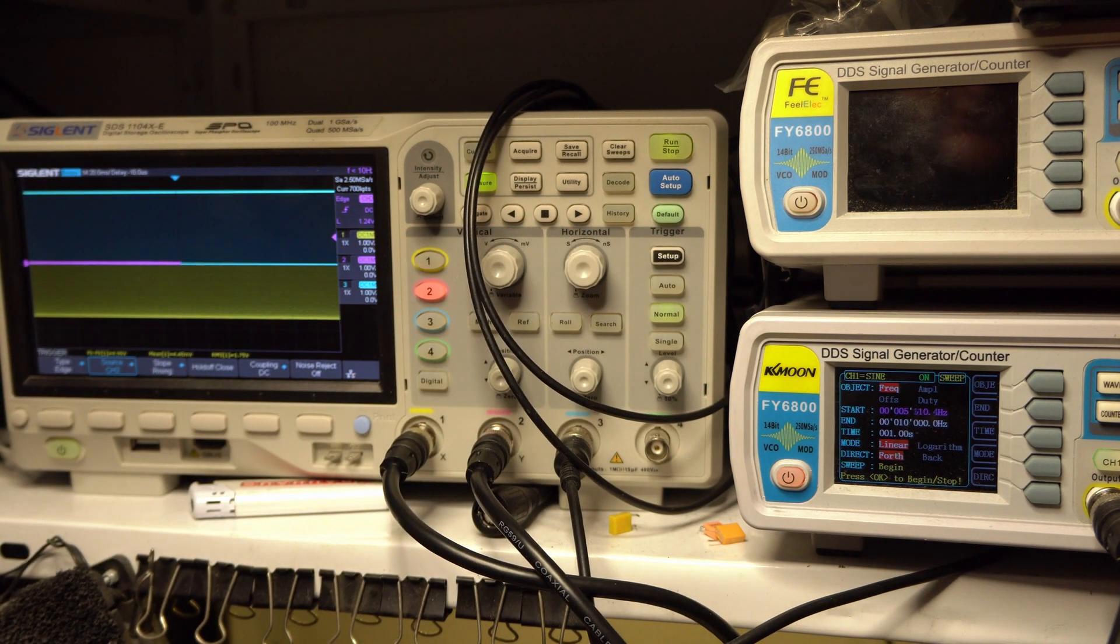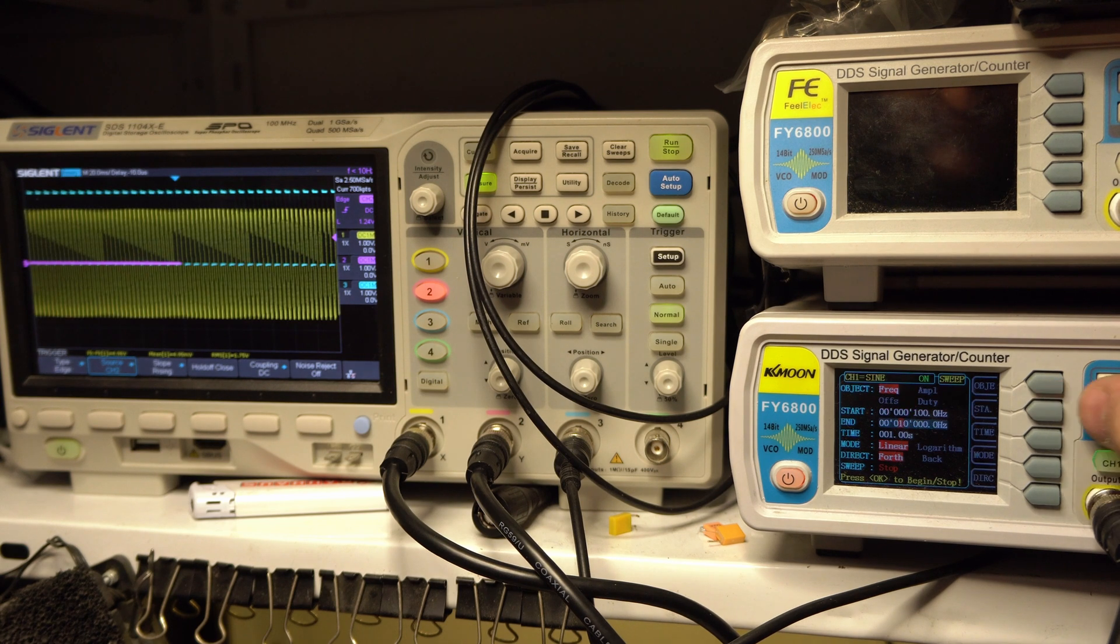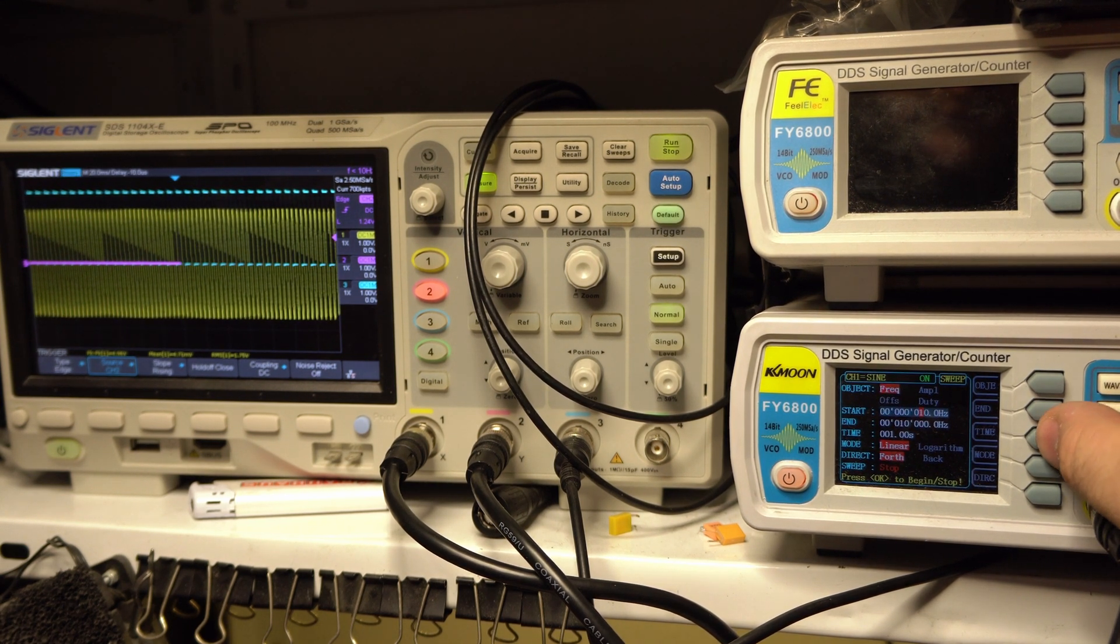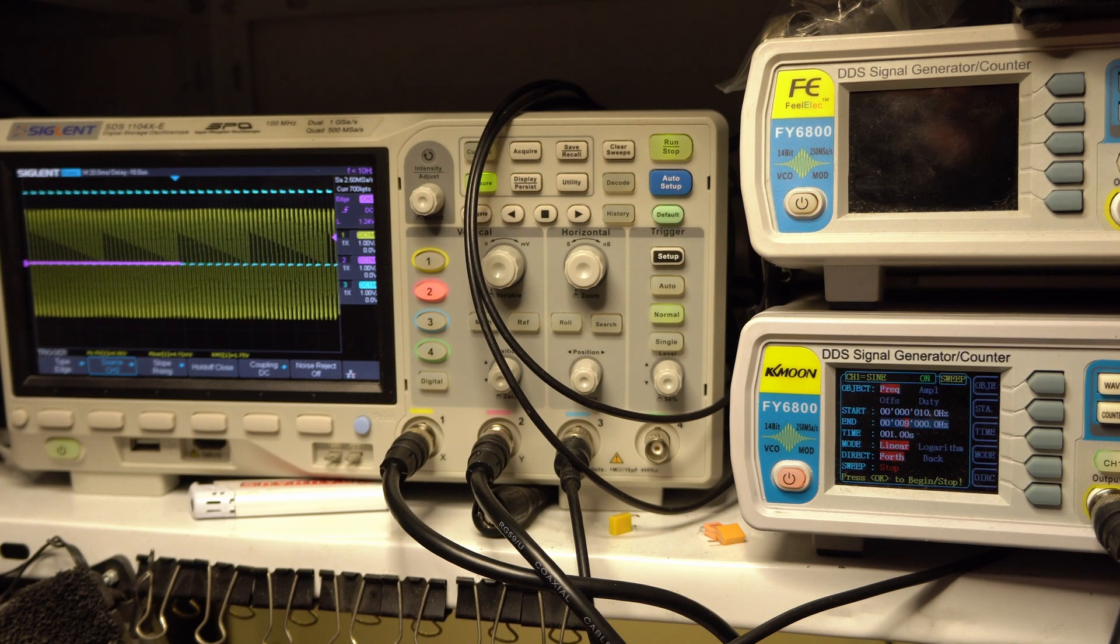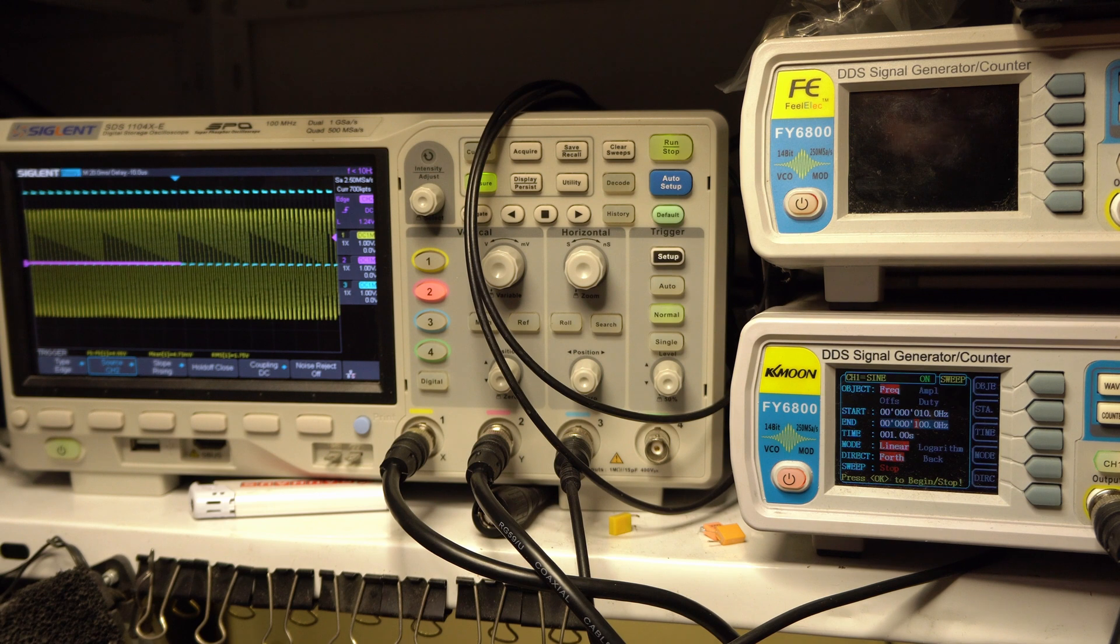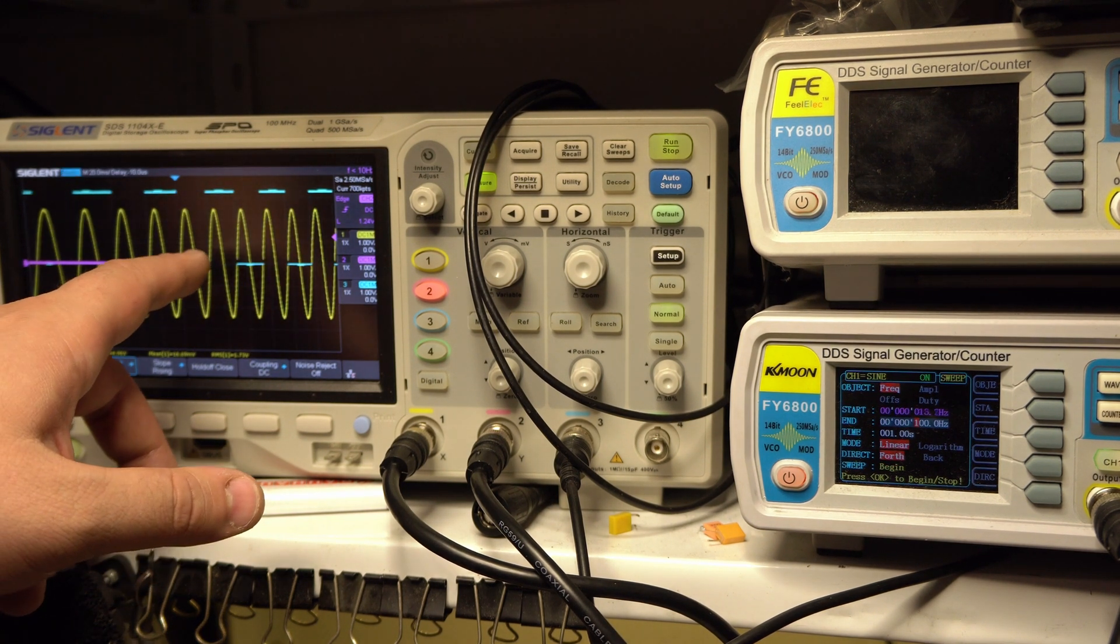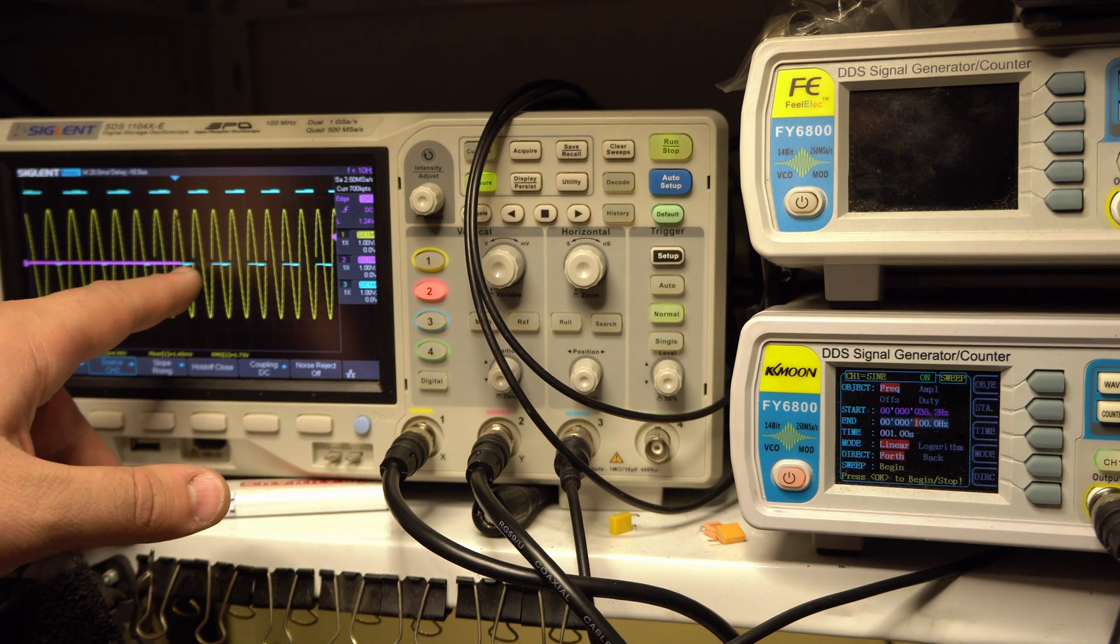Let's see. Yeah, now let's trigger off channel two normal and change the sweep from let's say 10 hertz to 100 hertz to better see it on the scope, again at one second.